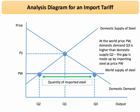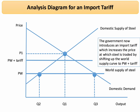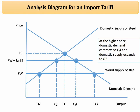All of this is before we've imposed an import tariff. Now let's assume the government introduces a tariff that increases the price from PW to PW plus T — effectively, the world supply shifts up by the amount of the tariff. Two things happen: the higher price makes it more viable for domestic steel producers to manufacture and make a sufficient profit, so domestic supply expands to Q5. But consumers now have to pay a higher price, so their demand contracts to Q4.